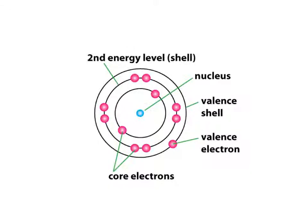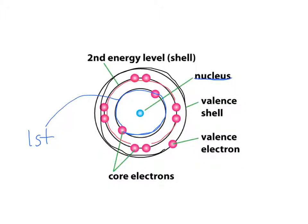The center is the nucleus — it's way too big as drawn, since the nucleus is really tiny. The shell closest to the nucleus is the first energy level, and that's where electrons are first placed. The next one out is the second energy level, and beyond that is the third energy level.